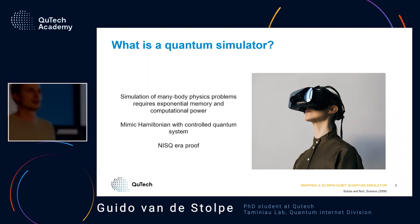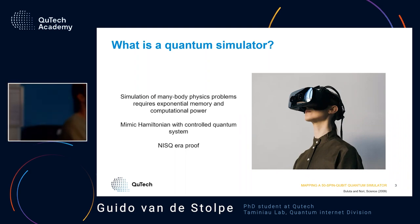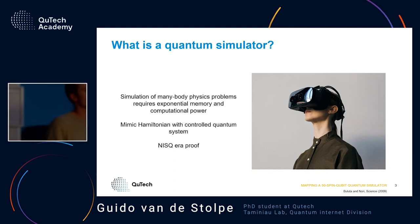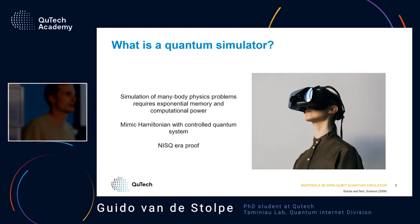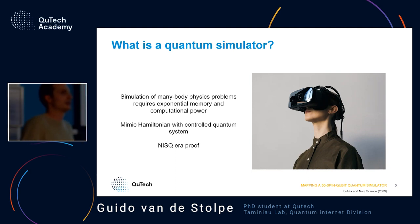An interesting thing about quantum simulators in comparison to quantum computers is that it's kind of NISQ-era proof. In the NISQ era we still have noisy intermediate scale quantum devices. For quantum simulators, the fidelities don't have to be 100%, you don't need error correction, and you can do already some very useful stuff when your qubits are still not perfect yet.